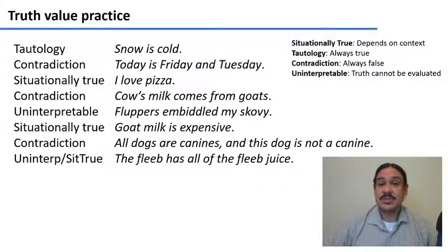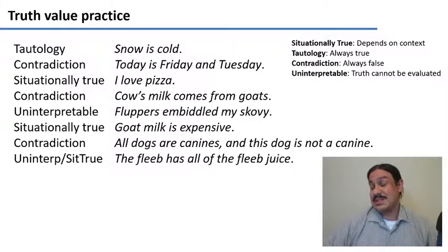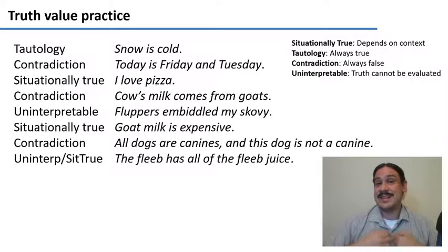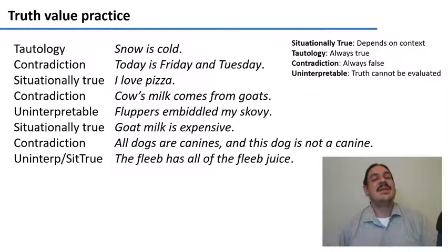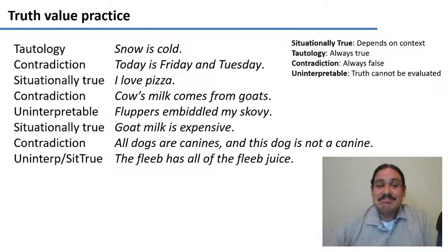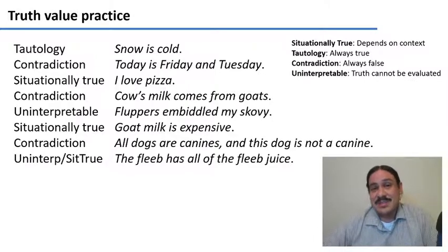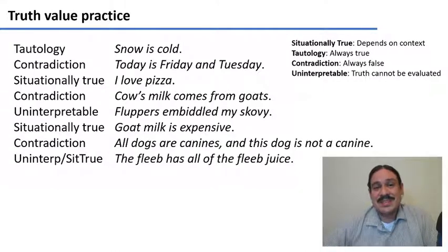'I love pizza' is situationally true because it depends on the person — maybe someone loves it, maybe someone does not, but if I say it, it would be true depending on context. 'Cow's milk comes from goats' — no, it comes from cows, so it's a contradiction; it cannot be true. 'Flappers and build my scoby' is an uninterpretable sentence, unless you know what those words mean.